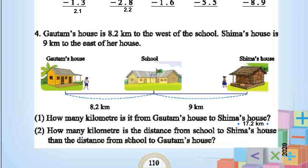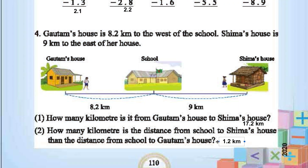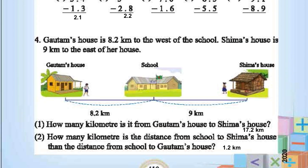Second part: how many km is the distance from the school to Shema's house more than the distance from the school to Gautam's house? 9 minus 8.2 is 1.2 km — we are looking at the difference between the distances. We will stop here and continue with the next topic in the next session.